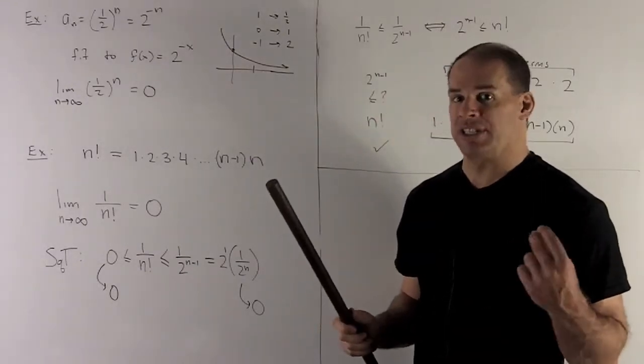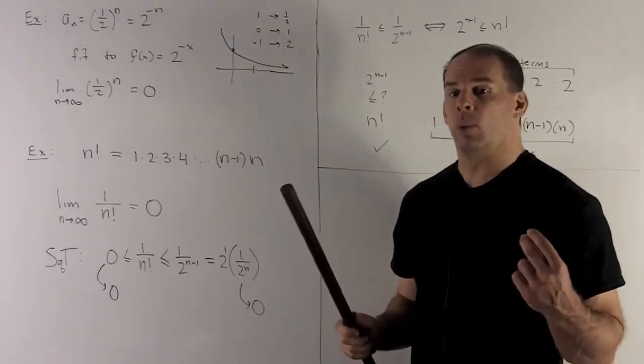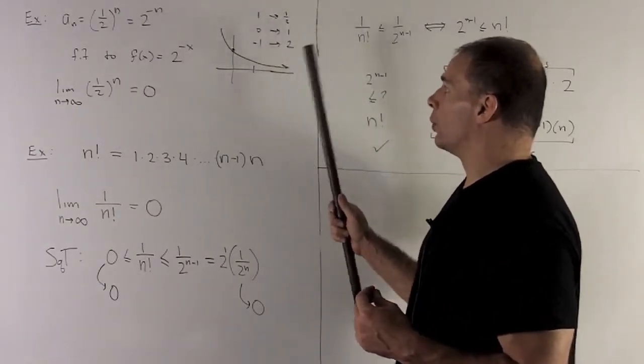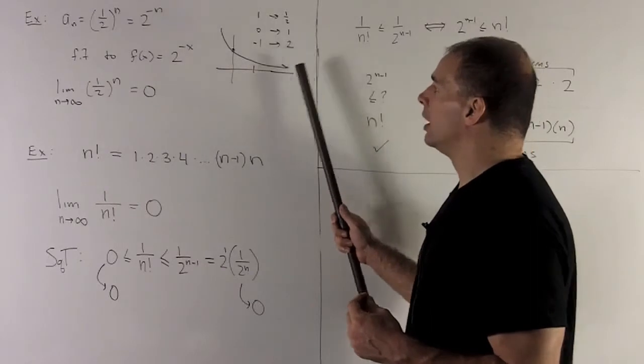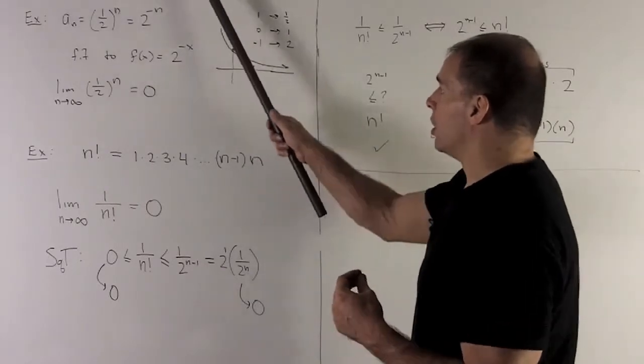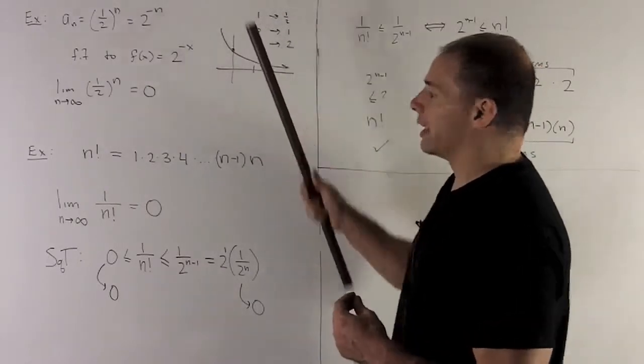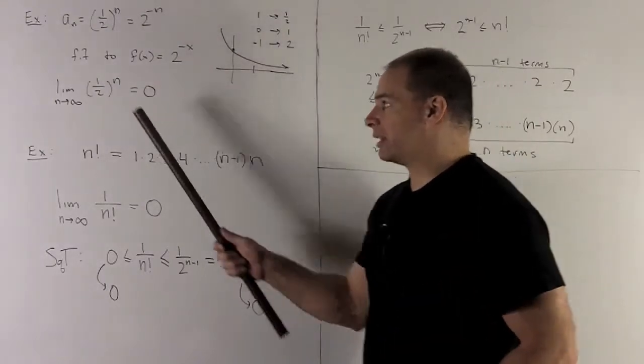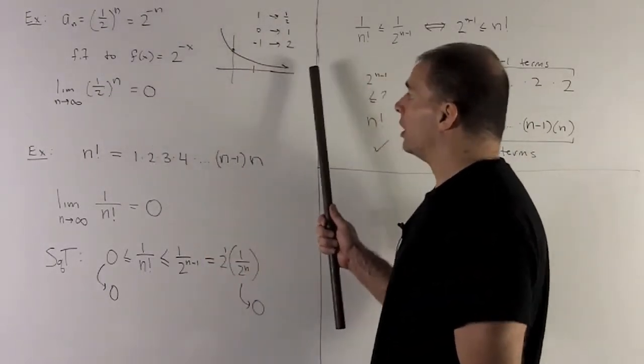As with the exponential, I just need to plot the three points: 1, 0, and -1. So 1 goes to a half, 0 goes to 1, minus 1 goes to 2. And then 2^(-x) looks like this graph here. Same idea as with e^(-x). So we have that the limit of this is going to go to 0.